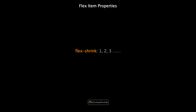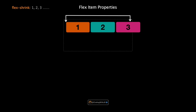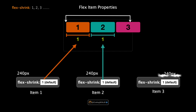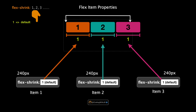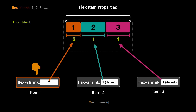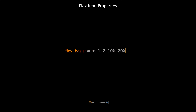Another essential property for flex items is flex-shrink, which determines how flex items shrink relative to each other when there isn't enough space in the container. Here we have three items each with a width of 240px, and by default flex-shrink is set to one — meaning if the container can't fit all items, they shrink equally. When we change the flex-shrink value of the first item to two, it will shrink twice as much as the other two items when space is insufficient, giving up more of its width compared to the others.